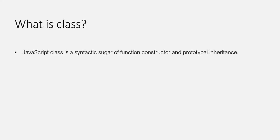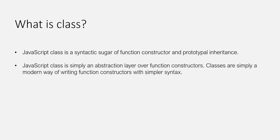In the JavaScript class lecture, we learned that a JavaScript class is a syntactic sugar of function constructor and prototypal inheritance. That means, behind the scenes, a JavaScript class uses the concept of function constructor and prototypal inheritance. In simple terms, JavaScript class is simply an abstraction layer over function constructors — a modern way of writing function constructors with simpler syntax.